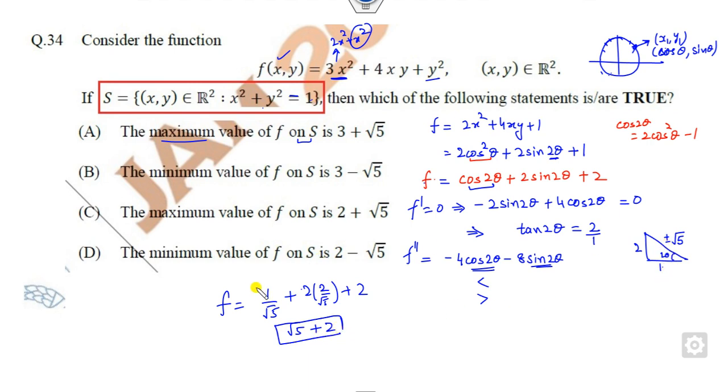But if you take it as negative, it will be minus. This minus, then it will be 2 - √5. This is the maximum value. This is the minimum value.